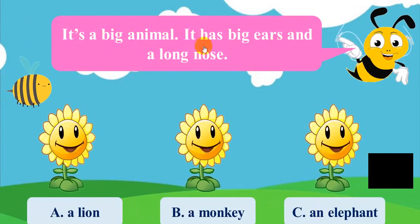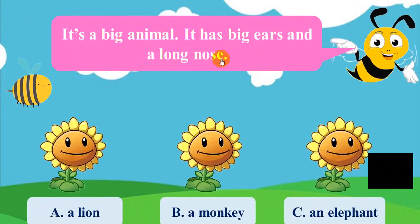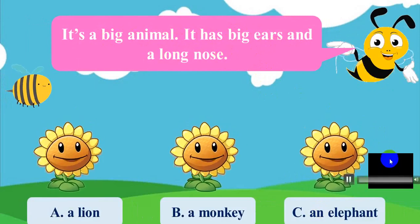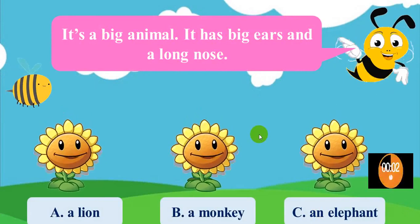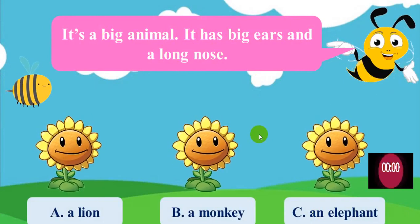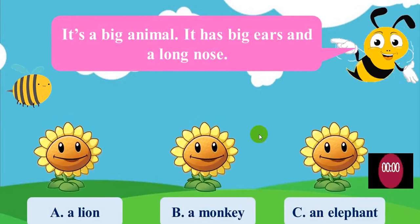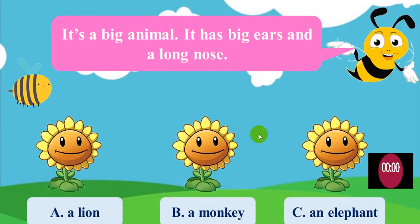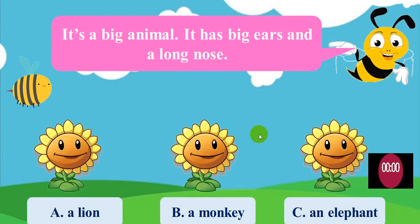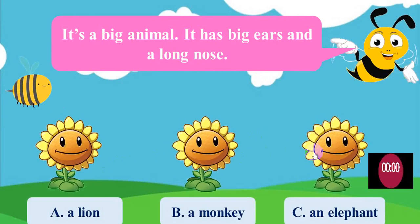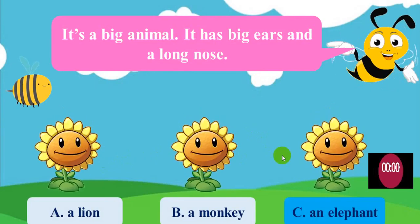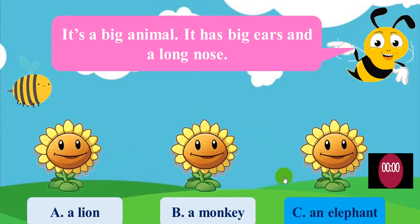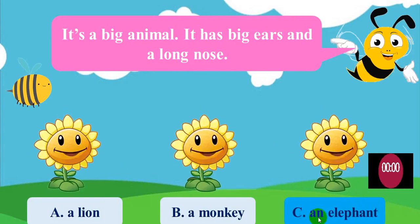It has big ears and a long nose. The answer is C, an elephant.